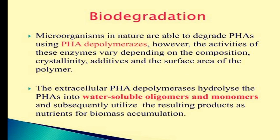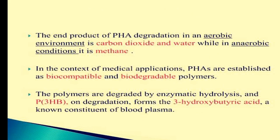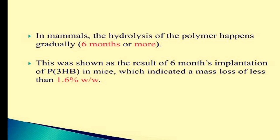Biodegradation of PHA: Microorganisms in nature are able to degrade PHAs using PHA depolymerases. However, the activity of these enzymes varies depending on the composition, crystallinity, additives, and surface area of the polymers. The extracellular PHA depolymerases hydrolyze the PHA into water-soluble oligomers and monomers, and subsequently utilize the resulting products as nutrients for biomass accumulation. The end product of PHA degradation in an aerobic environment is carbon dioxide and water, while in anaerobic conditions it is methane. In the context of medical applications, PHAs are established as biocompatible and biodegradable polymers. The polymers are degraded by enzymatic hydrolysis, and poly-3-hydroxybutyrate on degradation forms 3-hydroxybutyric acid, a known constituent of blood plasma. In mammals, hydrolysis of the polymer happens gradually over six months or more.